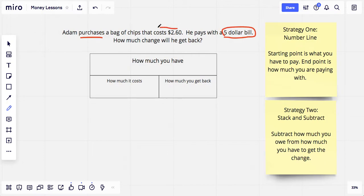He doesn't have exactly $2.65, so he is paying with his $5 bill. So we know that these are very important numbers. How much change will he get back? Change is the word we use for what's left over. How much will he get back is how much is left that belongs to Adam after he spends $2.60.